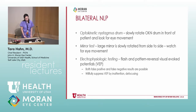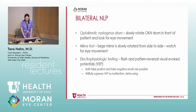You can test with the OKN drum — slowly rotate it in front of the patient and look for eye movement. Similarly, the mirror test: slowly rotate a mirror from side to side and look for eye movement. Then electrophysiologic testing — flash and pattern reversal VEPs. We think of this as more objective, but keep in mind you can still willfully suppress VEP by not paying attention or defocusing on the stimuli. It can give false positives and false negatives — it's not a perfect test, but adds to the overall picture.